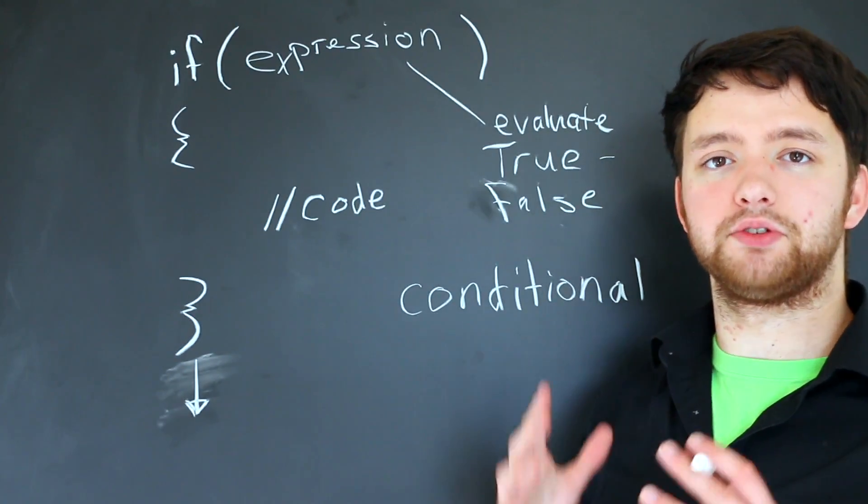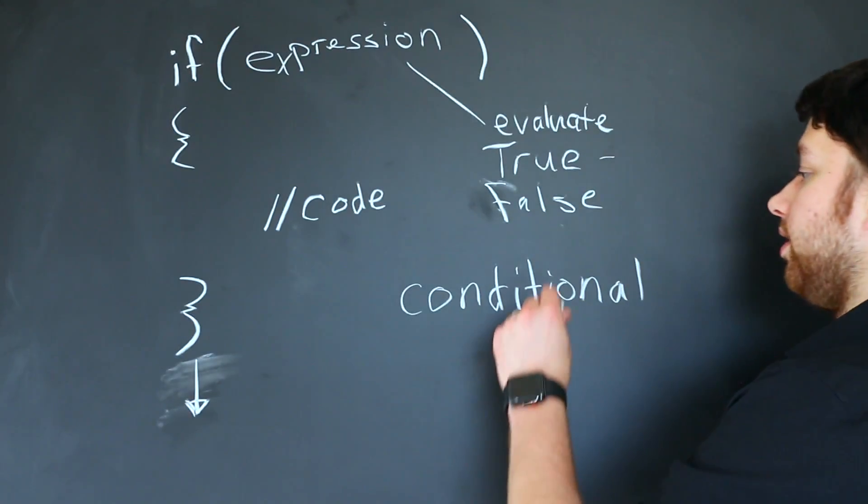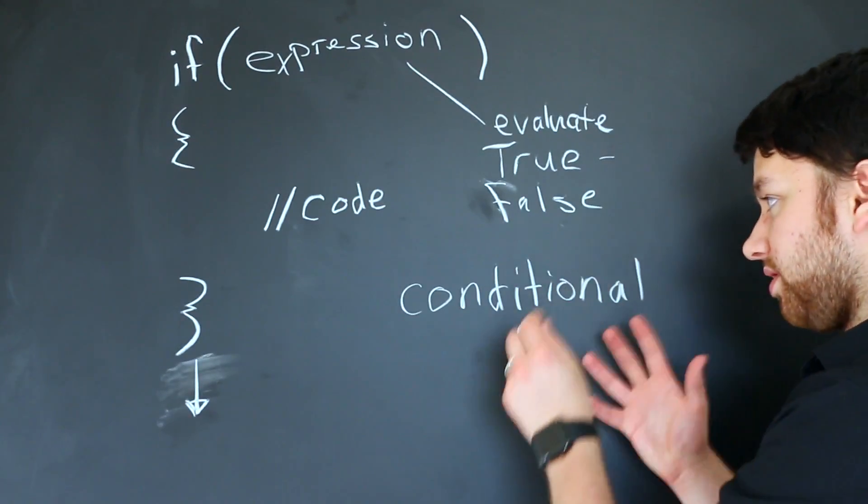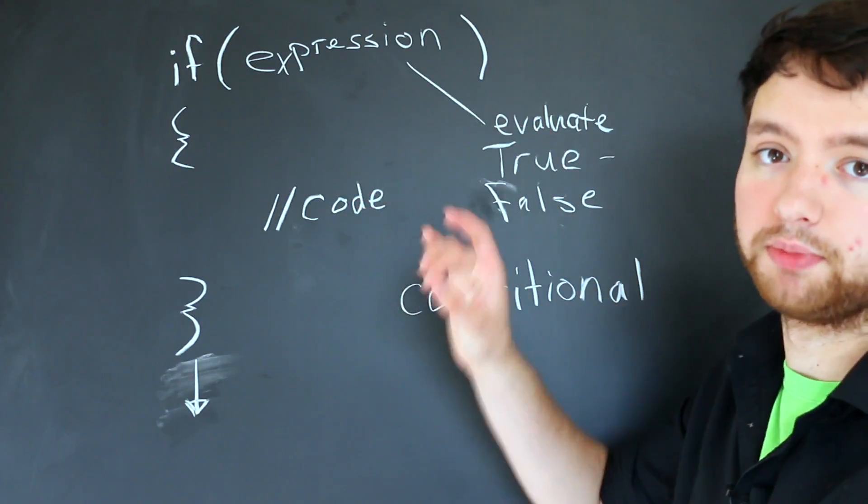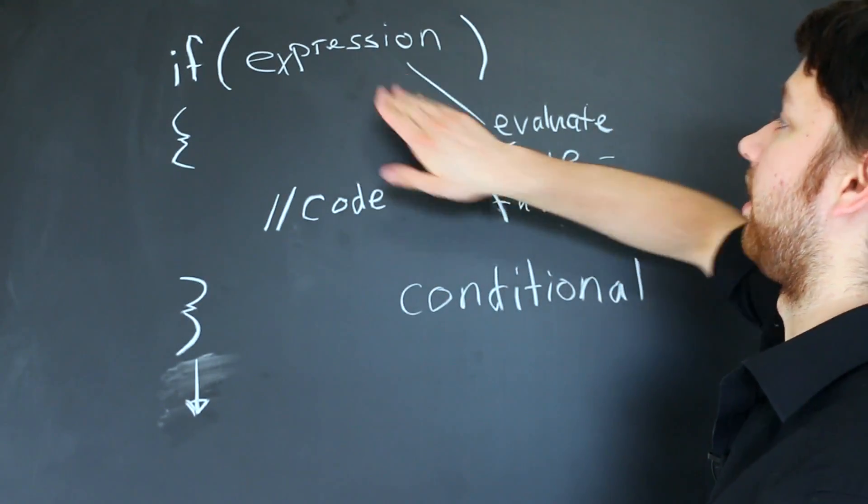We will be going into some examples in C programming in just a little bit, but for now we're just trying to get the concept down so you really understand what's going on here. This is a conditional, once again, because this is only going to execute on some conditions, which is when the expression is evaluated to true.